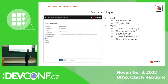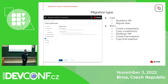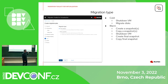We have multiple types of migration: either cold or warm. The cold migration shuts down the VM and copies the data — that's the most primitive approach. If you want to minimize downtime, you can use warm migration, which creates a snapshot from the VM while it's still running and moves that snapshot. After some time it creates another snapshot and incrementally migrates the VM. On the last pass, it shuts down the VM and moves the last data to the cluster, minimizing the downtime.